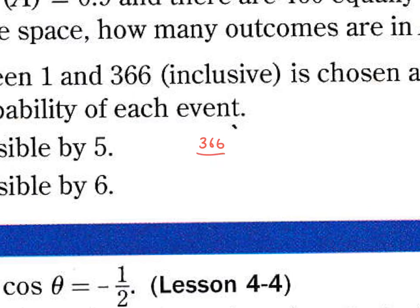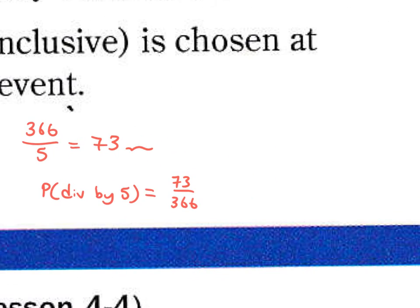So let's just do this: 366 divided by 5 gives you 73 with a remainder. All we need to do is say that the probability of divisible by 5 is going to be 73 divided by 366, and you can plug that into your calculator to get an approximate value in percent.